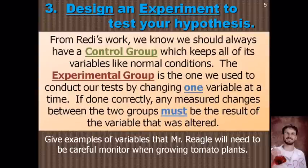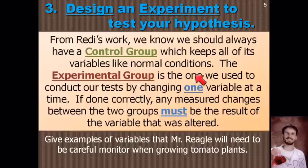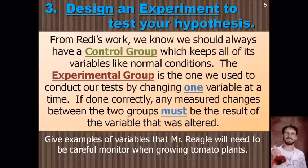From Redi's work, we know we should always have a control group — the group you don't do anything with, the group that's like normal. Then you have your experimental group. You can have more than two groups, but you always have that one control group, and any differences between the control and experimental group are what you're actually experimenting with. You should only ever have one variable that's different at a time, because when you have a measurable difference at the end, you need to be able to say it was this one variable that caused it. If you change ten things, you won't know which one did it.